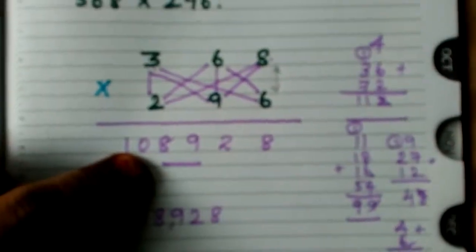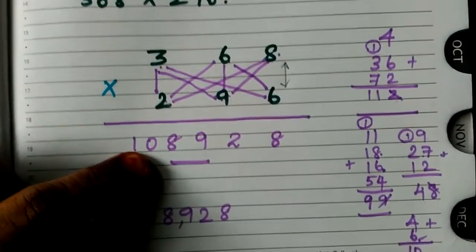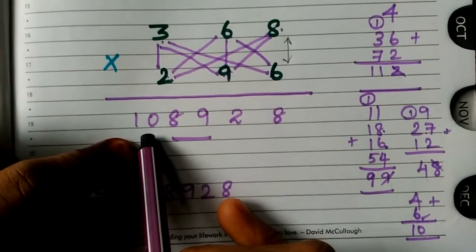Finally, 3 times 2 is 6. If you add, you will get the value 10. So 10 you have to take and write. Right children?